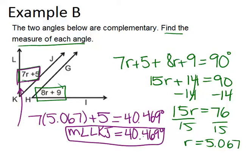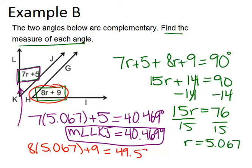You would do something similar to find the measure of the other angle by just plugging in 5.067 in for r in that second expression. And you end up with 49.536 degrees. So the measure of angle GHI equals 49.536 degrees.